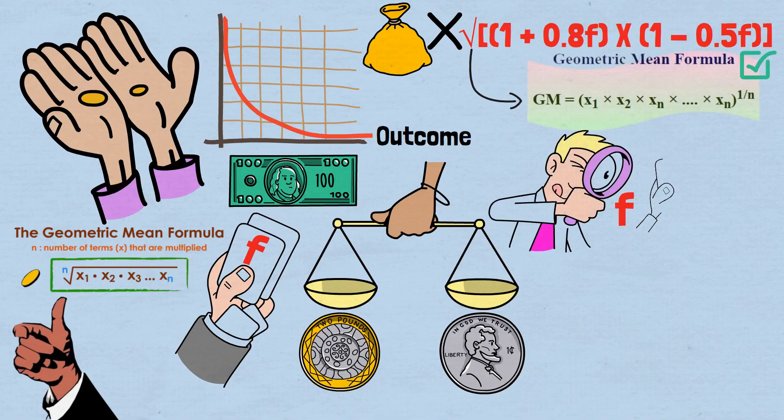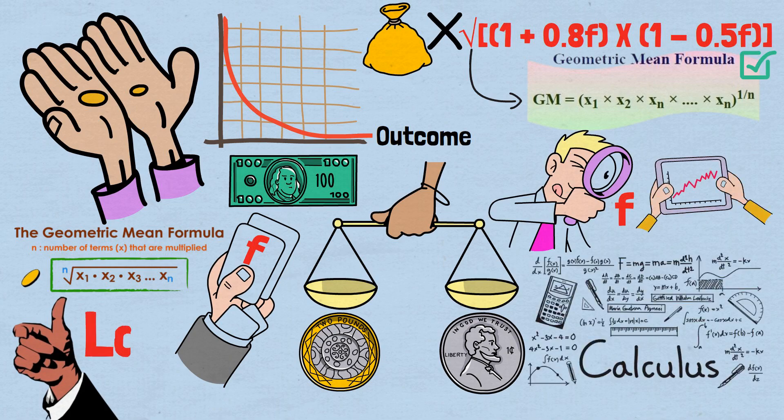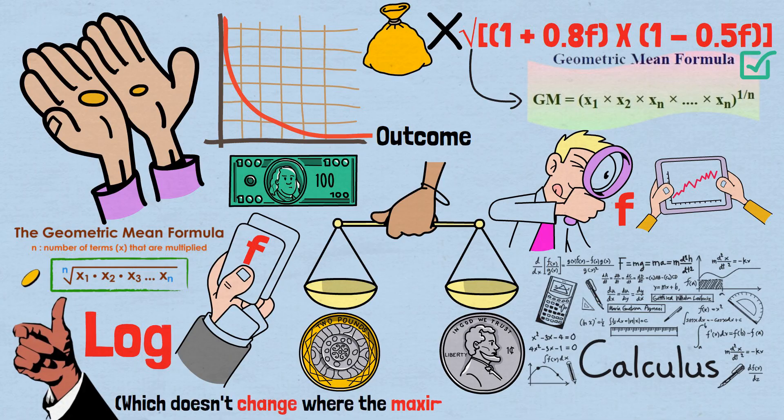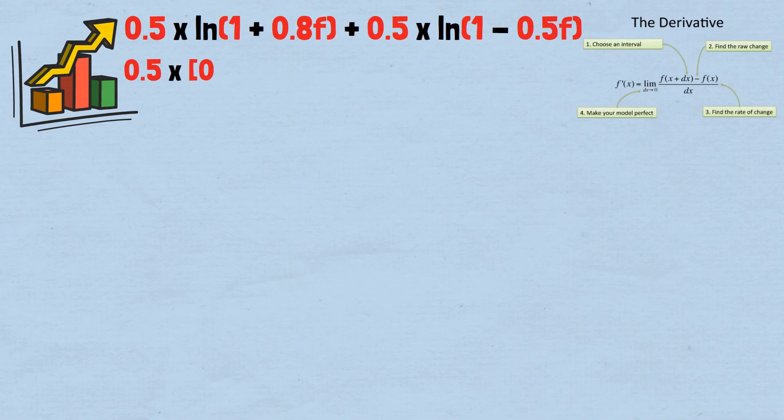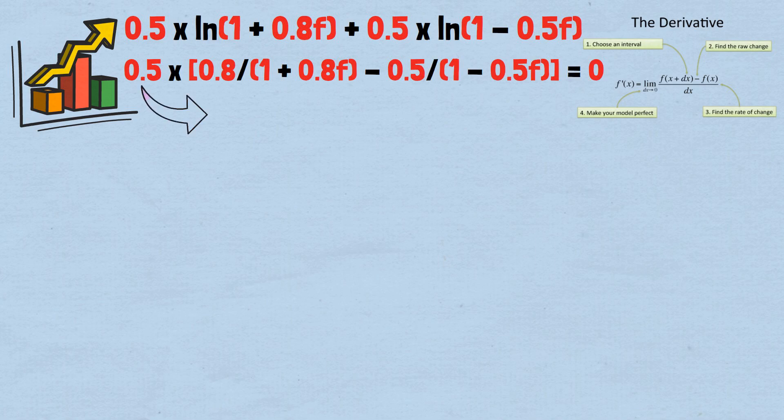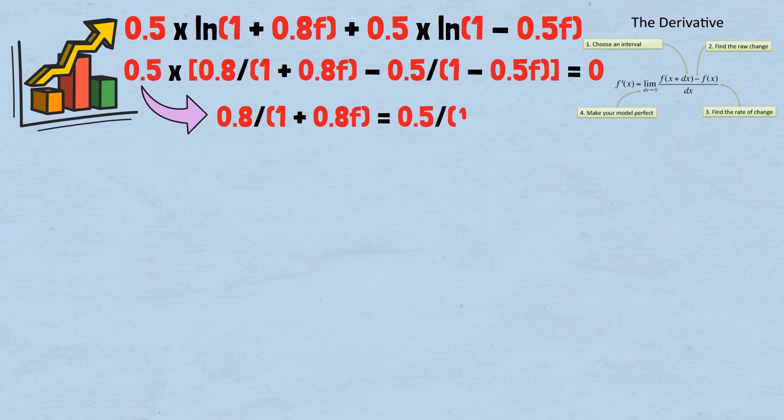If we bet fraction F of our wealth and we expect equal heads and tails over time, our wealth gets multiplied by square root 1 plus 0.8 F times 1 minus 0.5 F. This square root represents the geometric mean, the right way to average multiplicative processes. To find the optimal F, we maximize this expression using calculus. Taking the logarithm first, which doesn't change where the maximum occurs but makes the math easier, we want to maximize 0.5 times the natural logarithm of 1 plus 0.8 F plus 0.5 times the natural logarithm of 1 minus 0.5 F. Taking the derivative and setting it equal to 0, 0.5 times 0.8 divided by 1 plus 0.8 F minus 0.5 times 0.5 divided by 1 minus 0.5 F equals 0.